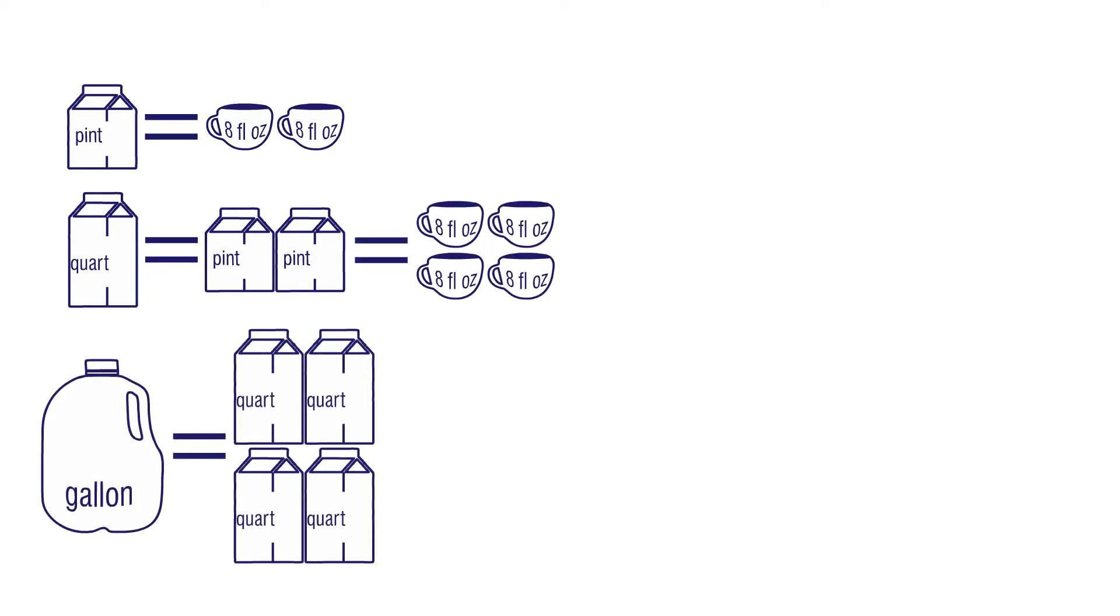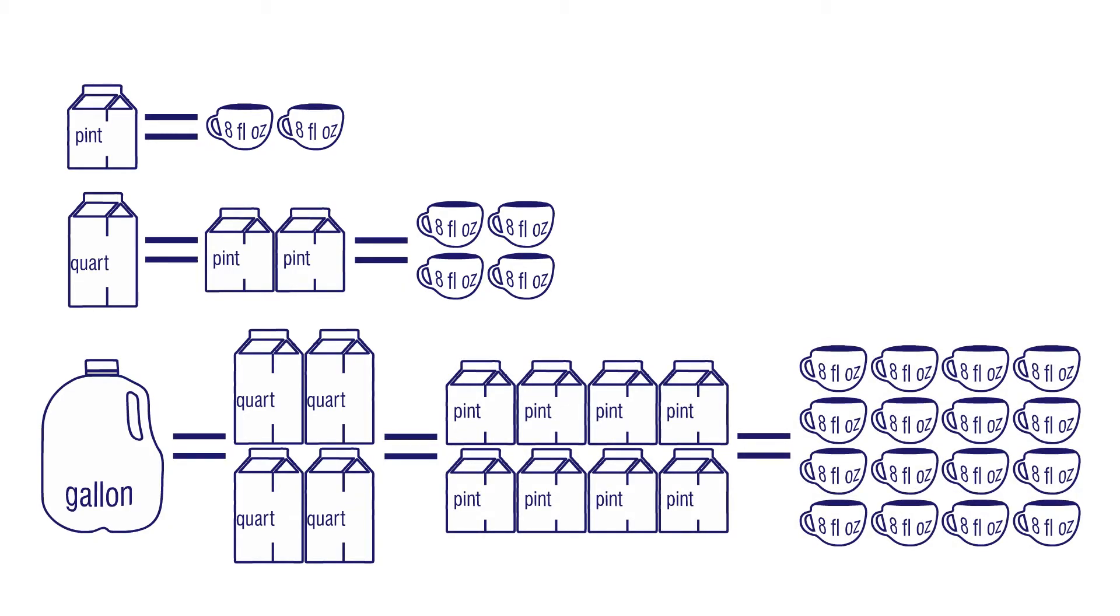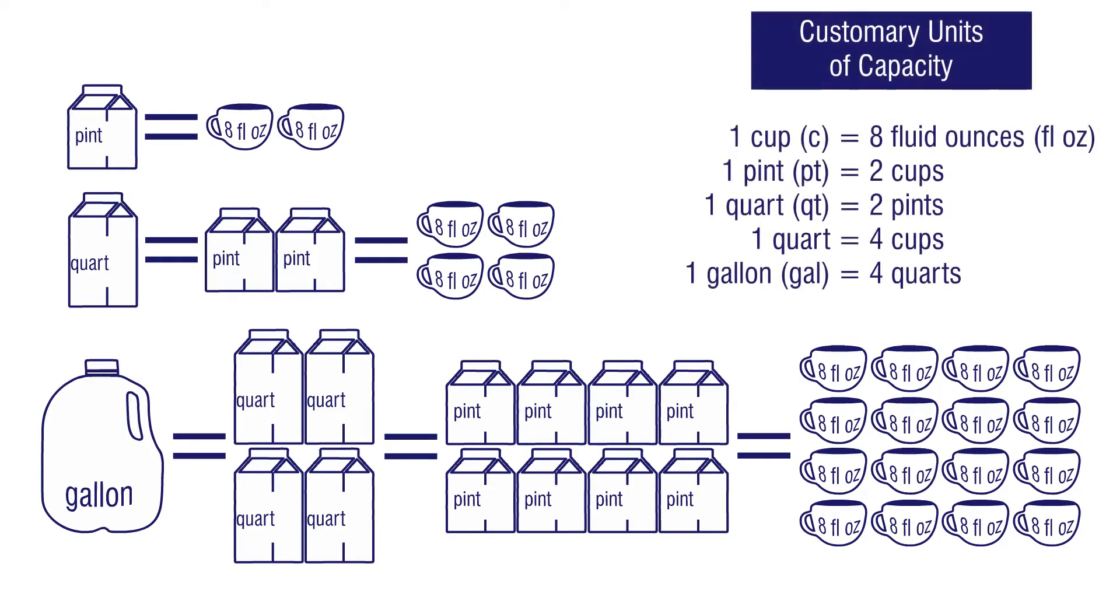One gallon is equal to four quarts, or eight pints, or sixteen cups. This table shows the relationships between the customary units of capacity.